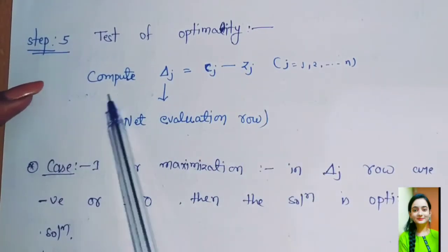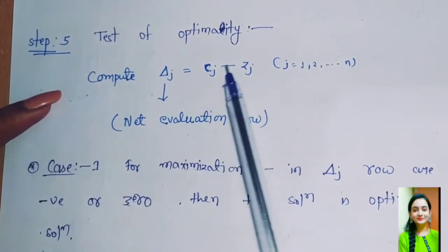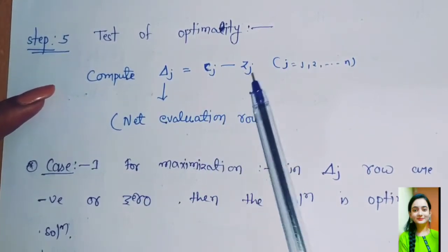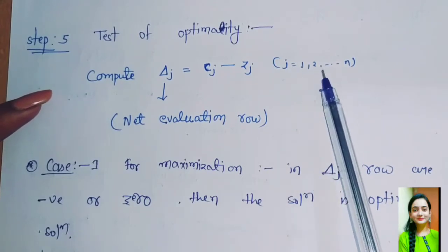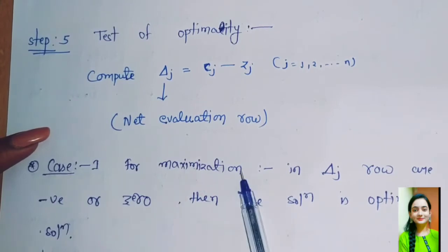Step 5: Test of optimality. For this we will compute Δj, which is called net evaluation. This is equal to cj - zj, where j = 1, 2, up to n. There are two cases. First one is case 1 for maximization problem.